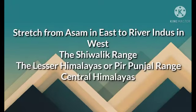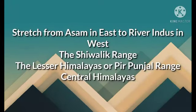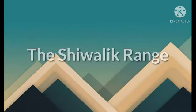The Himalayan Range is further divided into three categories: the Shivalik Range, the Lesser Himalayas also known as the Pir Panjal Range, and the Central Himalayas. Let's have a look at the Shivalik Range. The Shivalik Range has less height — basically it lies at the junction of the plain area and the mountainous areas.